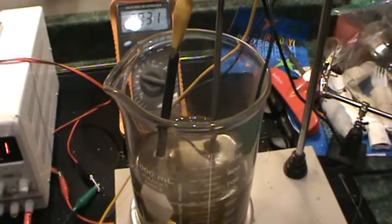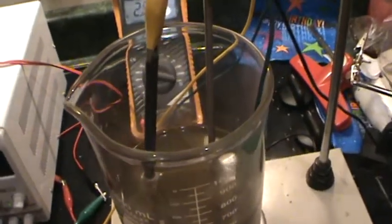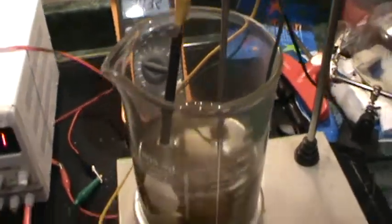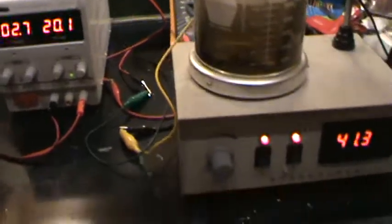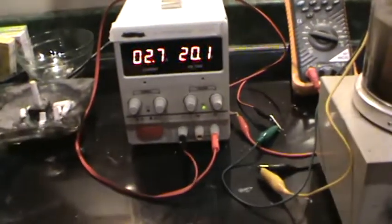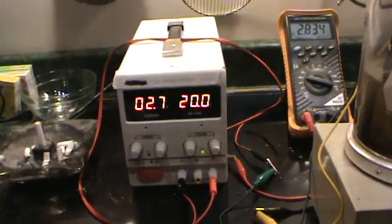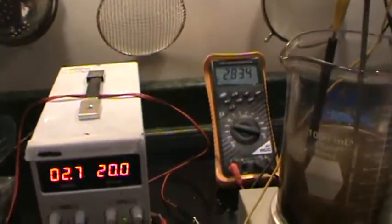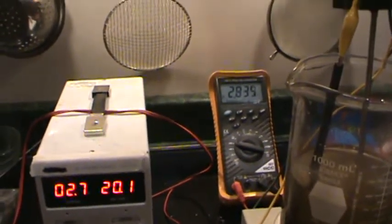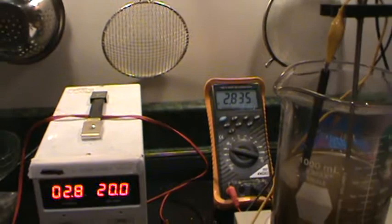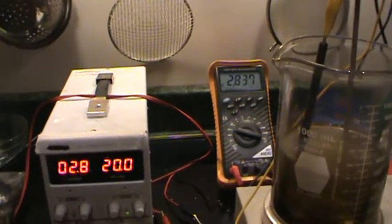I'm using a carbon rod for the positive. I've got it up to 20 volts DC. It's drawing 2.835 amps and it seems to be increasing.